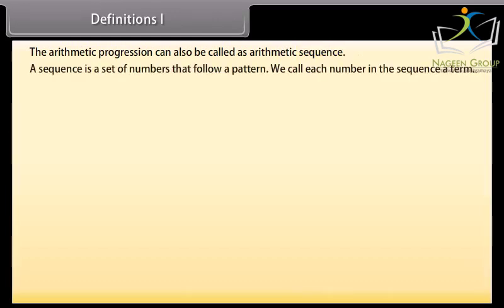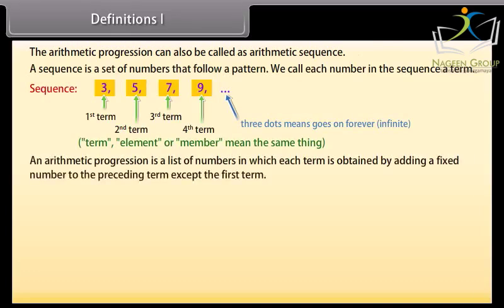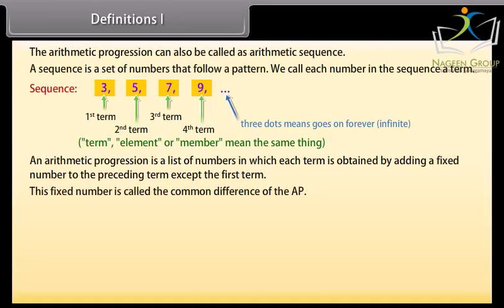A sequence is a set of numbers that follow a pattern. We call each number in the sequence a term. Look at this example of a sequence. This is the first term, this is the second, this is the third, and so on. An arithmetic progression is a list of numbers in which each term is obtained by adding a fixed number to the preceding term, except the first term. This fixed number is called the common difference of AP.